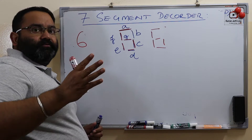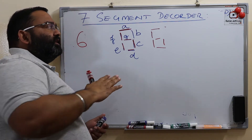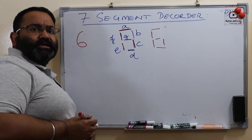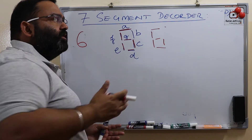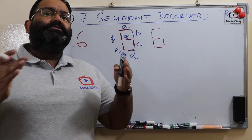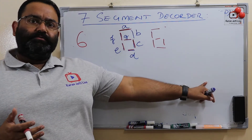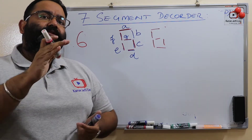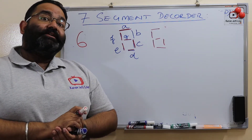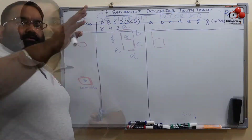In this video, we will do the truth table for our 7-segment decoder — how we will decide for which decimal number, which segments will be on and which segments will be off. We know this intuitively, but how can we program it in digital logic? Digital logic works in zeros and ones. So how can we write the truth table, and from that truth table, what should be the Boolean equations which can be used to create a circuit for a 7-segment decoder? All that we will do in this video.